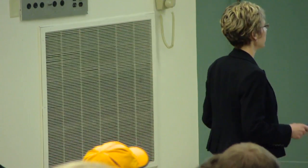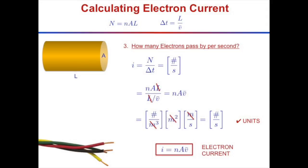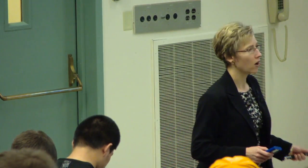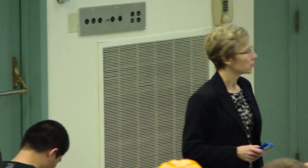Let's check units. Number density is number per meter cubed, A is meters squared, velocity is meters per second. So n times A times V gives meters-cubed over meters-cubed per second — the meters cancel and we get numbers per second. Units work out correctly.